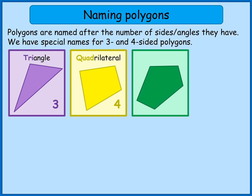Our next one has got five sides and it's called a pentagon. You can see the names have changed slightly now — we've gone triangle, quadrilateral, and then we've got 'pent' which tells us about the number of sides and then the 'agon' bit on the end. We stop bothering with special names for polygons once we get past triangle and quadrilateral. After this, all of the polygons are named after the number of sides. So 'pent' is to do with five, so a pentagon has five sides.